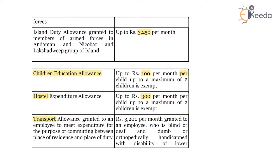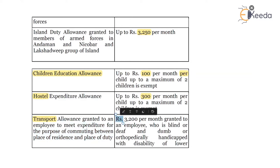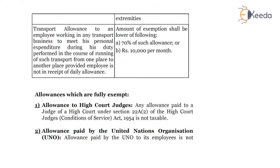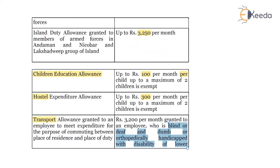Transport allowance granted to an employee to meet expenditure for the purpose of commuting between place of residence and place of duty is applicable only up to 3,200 per month, and it is granted to an employee who is blind, or deaf and dumb, or orthopedically handicapped with a disability of lower extremities. So if the employee is blind, deaf and dumb, or handicapped, the exemption allowed is 3,200 per month for transport between place of residence and place of duty.